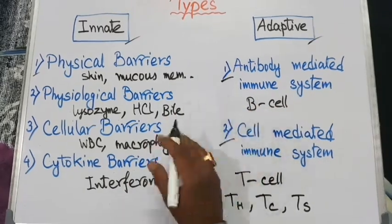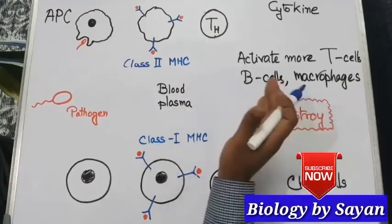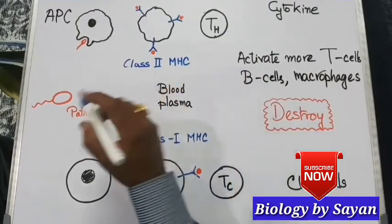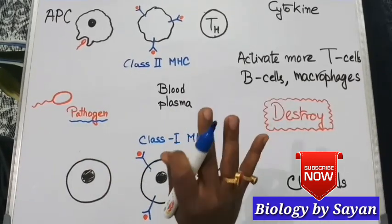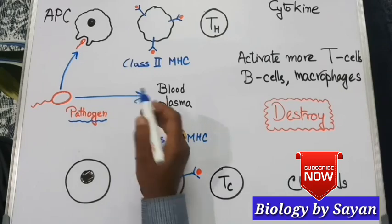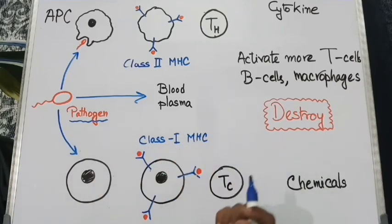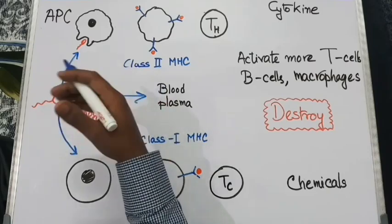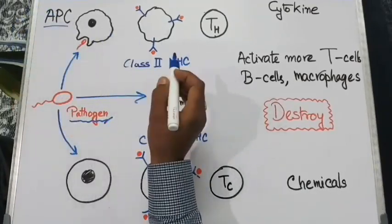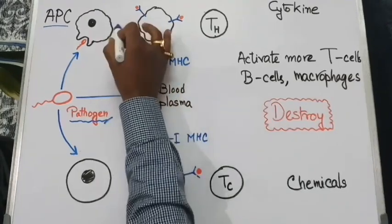Now let's discuss the coordinated mechanism of innate and adaptive immune systems using a schematic representation. Whenever any pathogen invades our body, it may enter in three ways: it may be engulfed by macrophages, it may freely flow in the blood plasma, or it may enter any general nucleated body cell. If a pathogen is engulfed by macrophages, NK cells, or dendritic cells — collectively called antigen-presenting cells (APC) — these cells ingest and digest the pathogen.